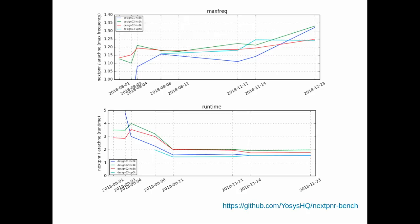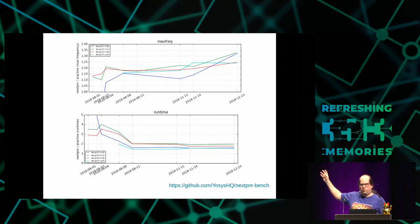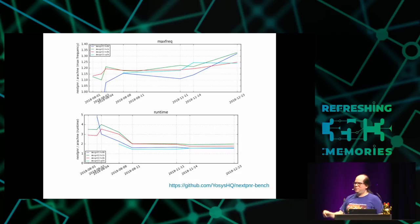This chart compares quality of results — maximum frequency — between NextPNR and Arachne PNR at roughly regular intervals. Arachne PNR is now mostly a stable artifact with only bug fixes. You can see NextPNR is improving. If we could keep up the rate of improvement for another year, we'd produce designs that run faster than physically possible — so clearly we're already pretty close to what can actually be achieved.